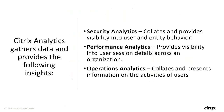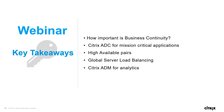Citrix Analytics gathers data and provides three types of insights. Security analytics collects and provides visibility into user and entity behavior, using advanced machine learning algorithms to distinguish between normal employee behavior and that of a malicious attacker, enabling proactive identification of internal and external threats. Performance analytics provides visibility into user session details, allowing organizations to monitor and troubleshoot issues during a user's logon. Operational analytics also plays a role. That's what we covered today: business continuity, Citrix ADC for mission critical applications, high availability pairs, GSLB, and Citrix analytics.